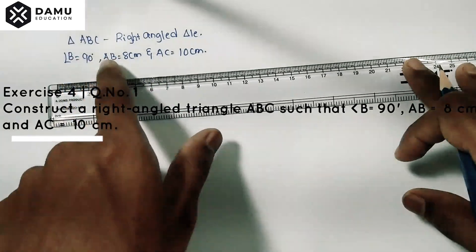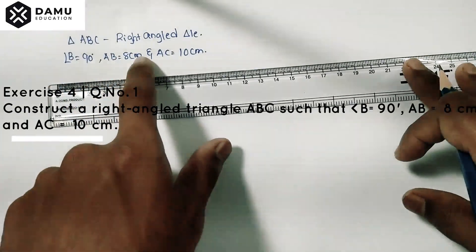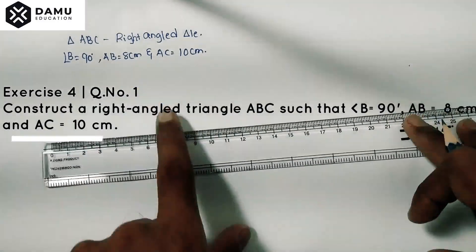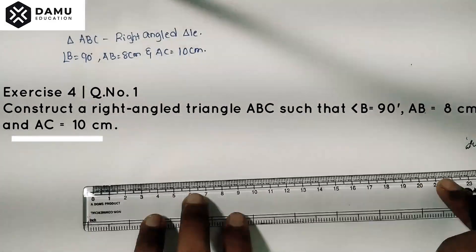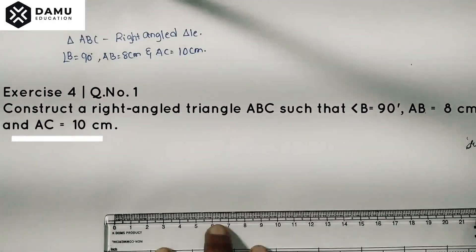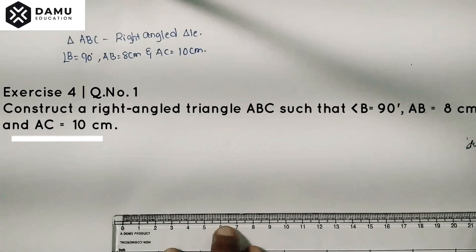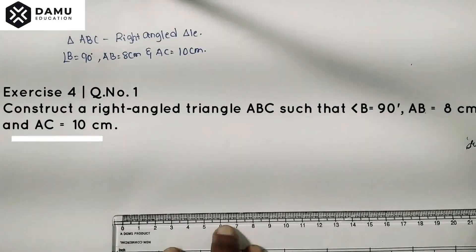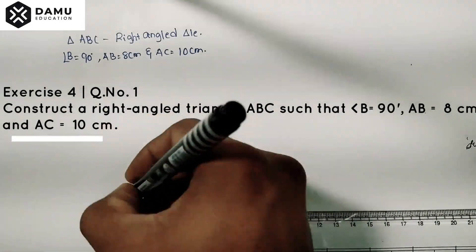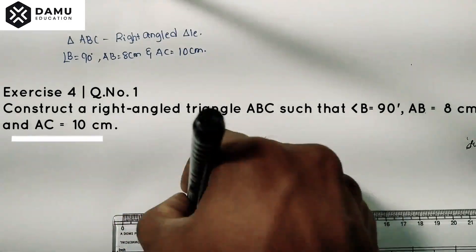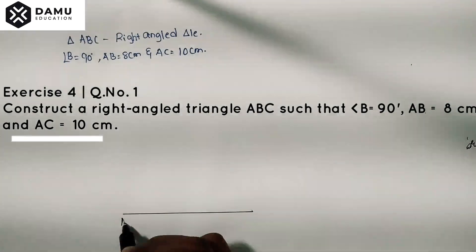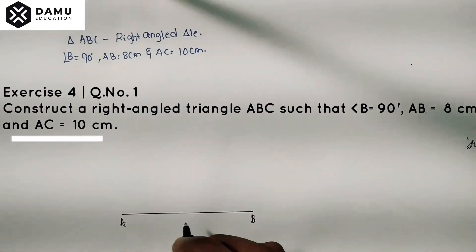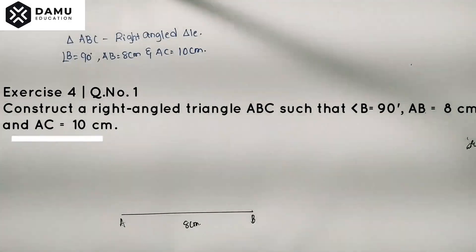First, draw AB equals 8 centimeters. So AB is 8 centimeters.